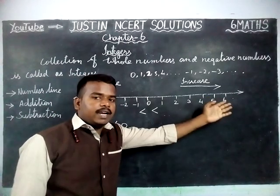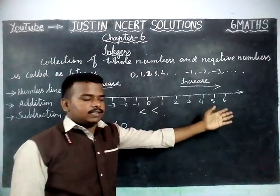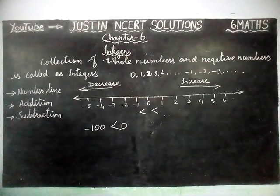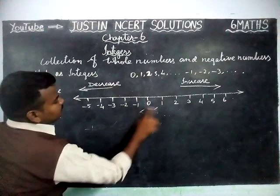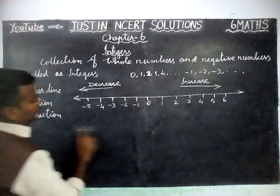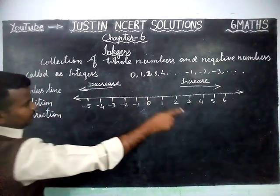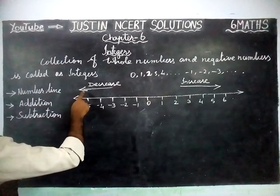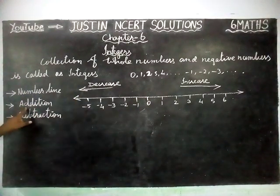When you are moving right-hand side, value will increase. In the number line, if you move right-hand side, value will increase. If you move left-hand side, value will decrease. Now we are going to see addition.